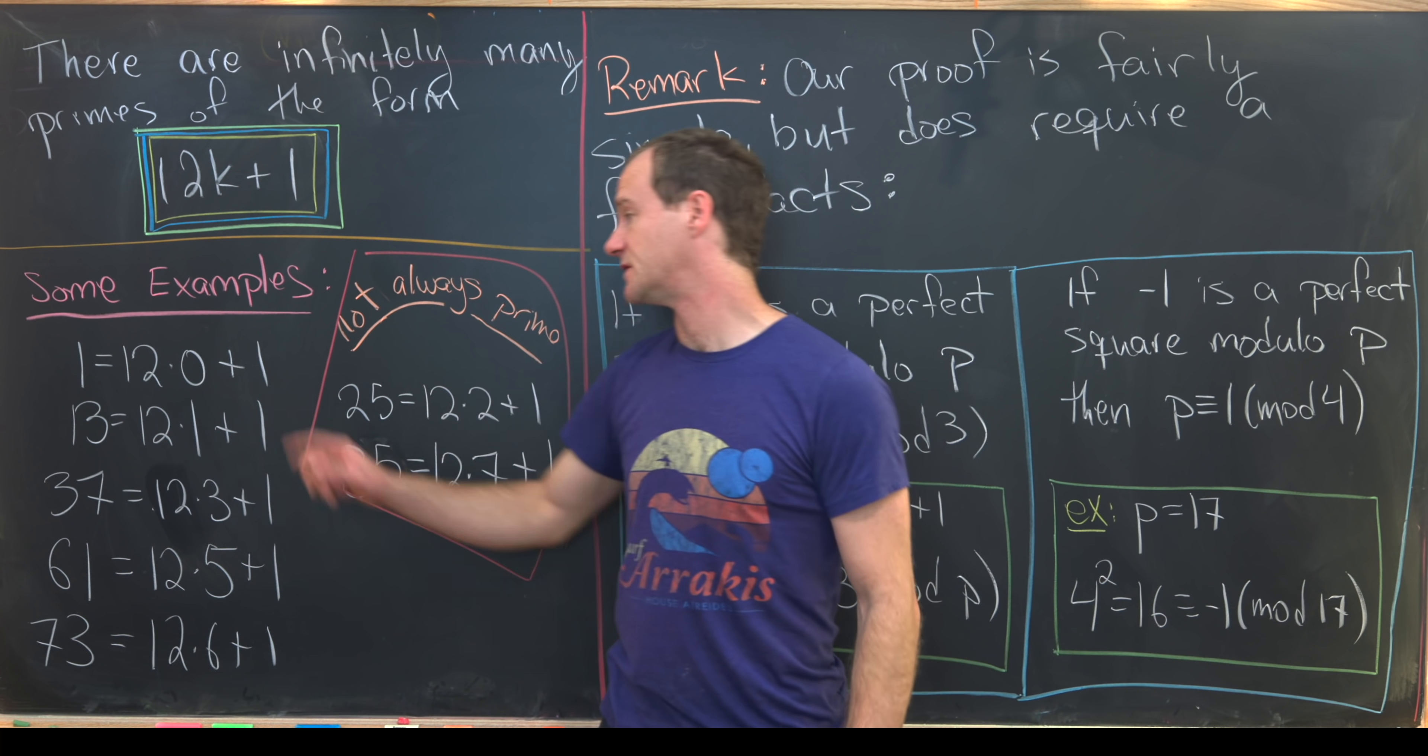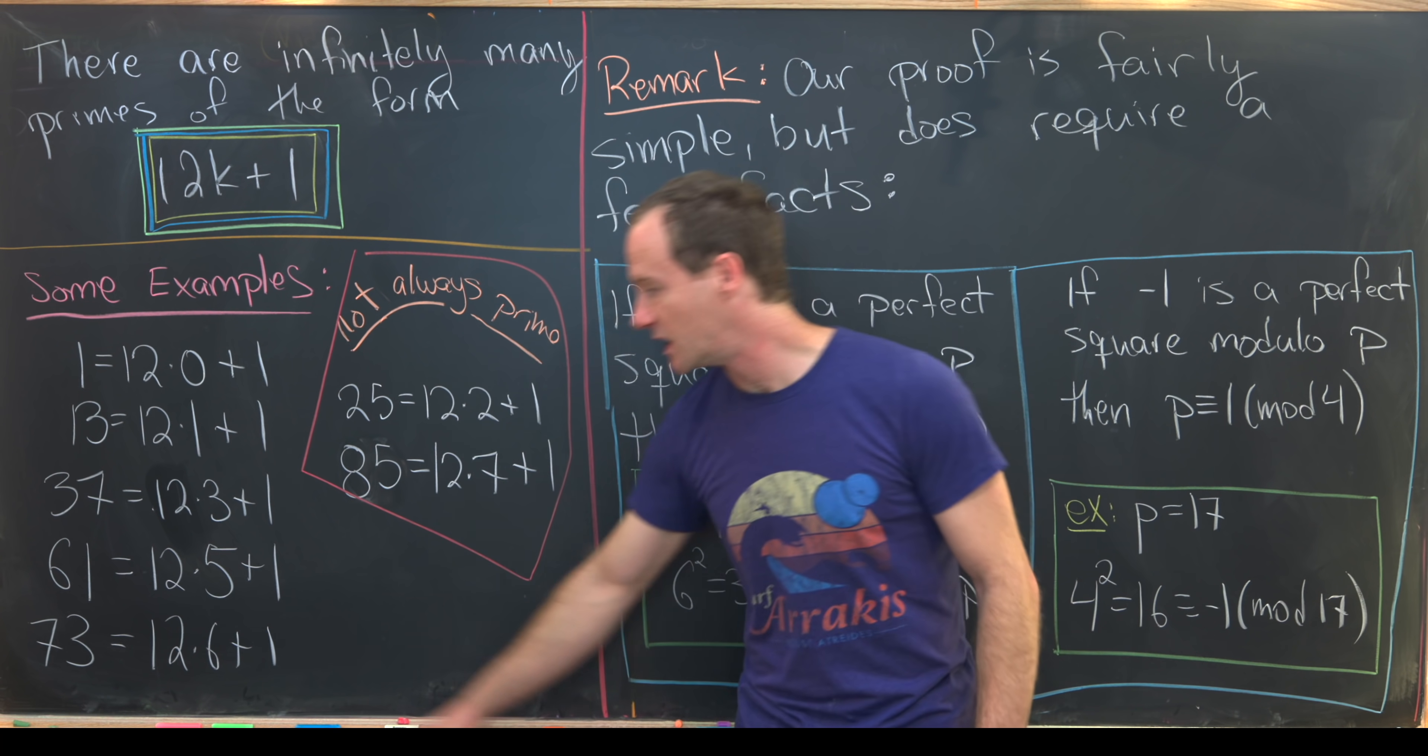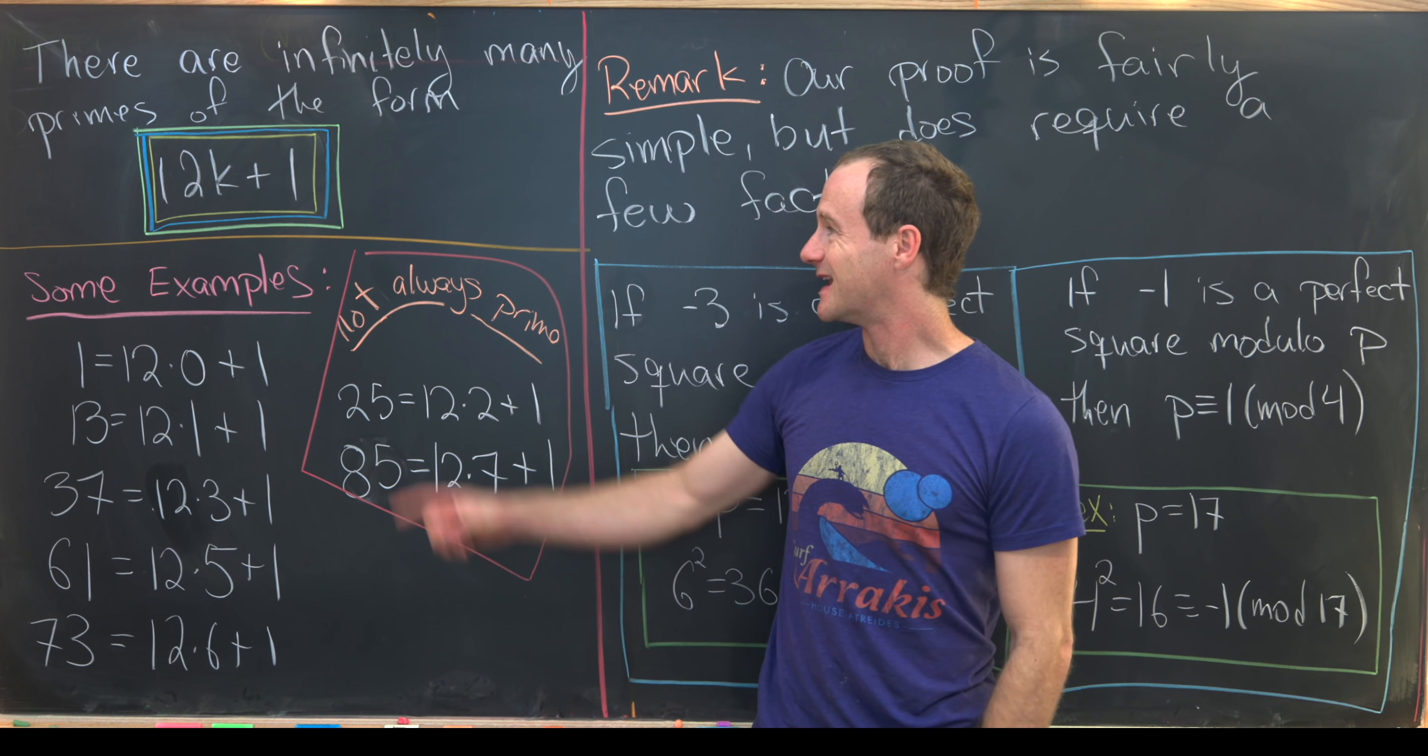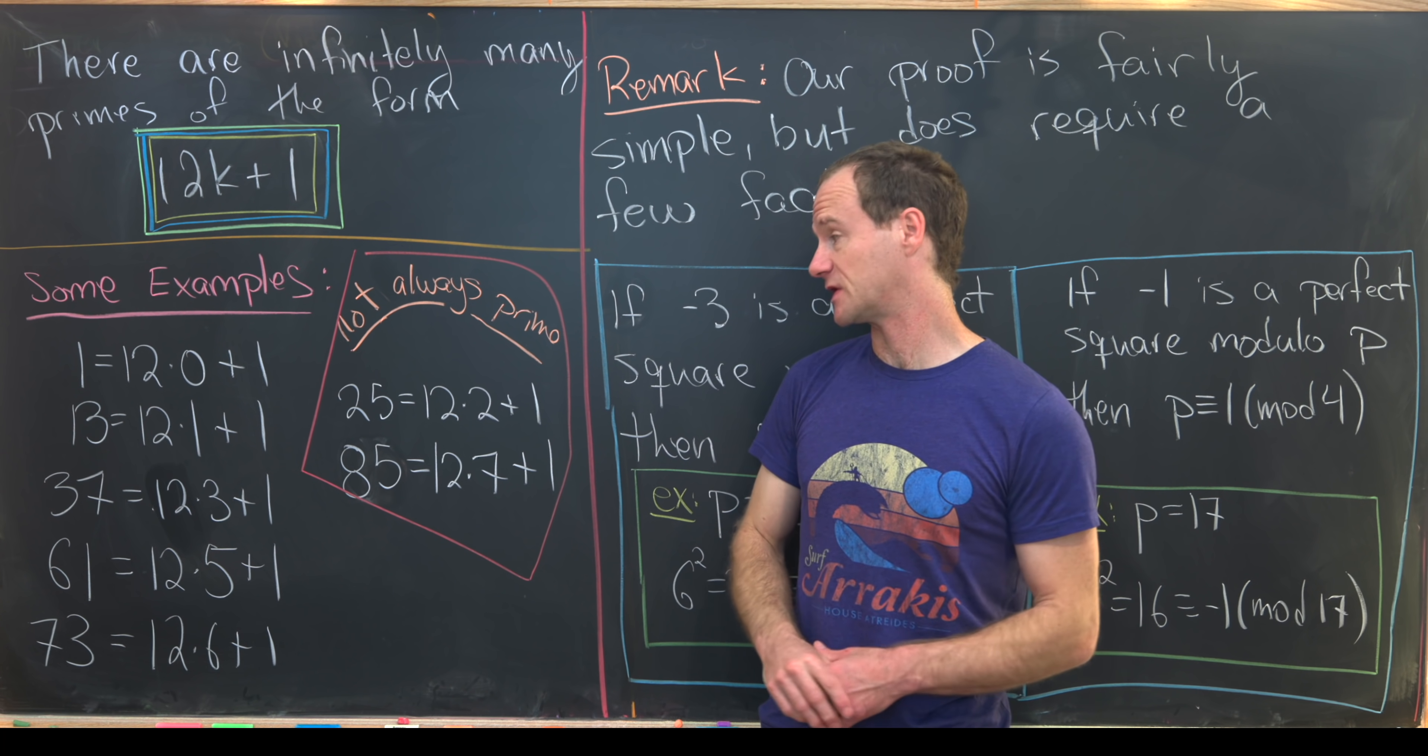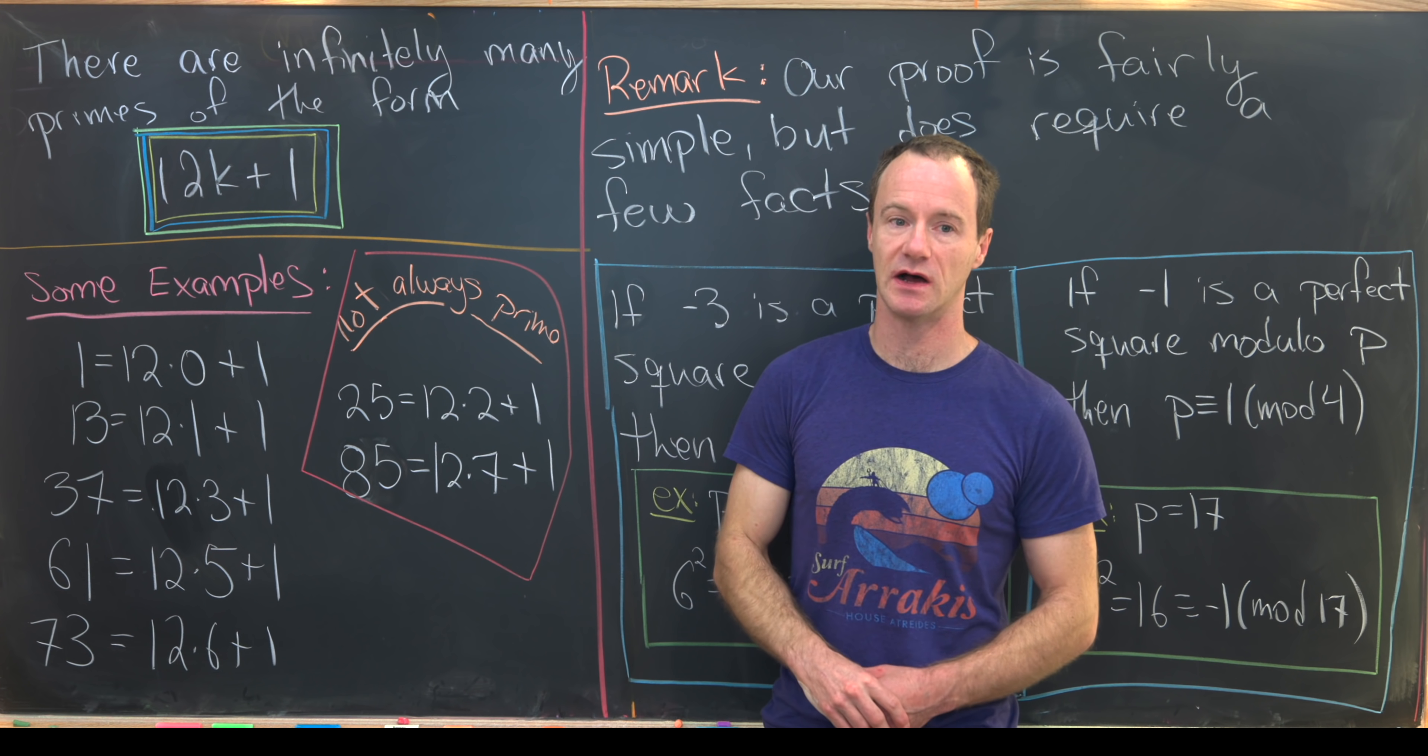So 1 is obviously of this form. It's 12 times 0 plus 1. 13 is 12 times 1 plus 1. 37 is 12 times 3 plus 1. 61 and 73 are also primes of this form. But notice that not everything of this form is prime. 25 is equal to 12 times 2 plus 1, and 25 is obviously not prime. And 85 is 12 times 7 plus 1.